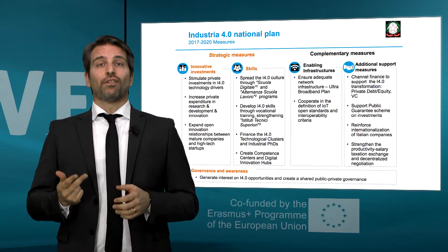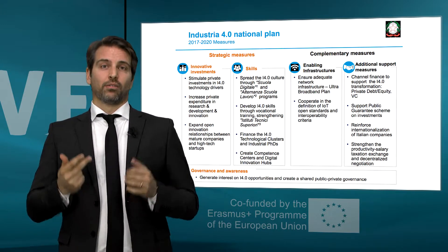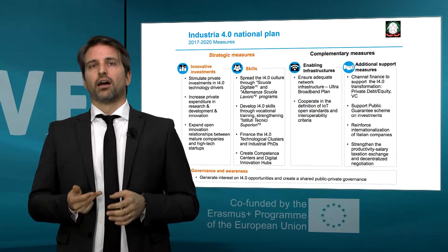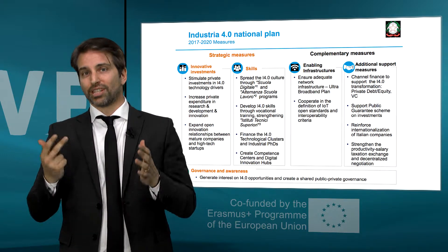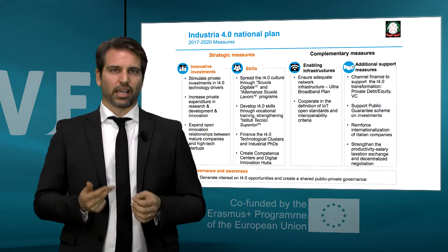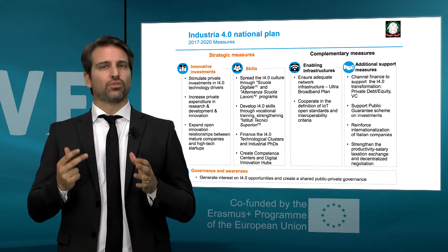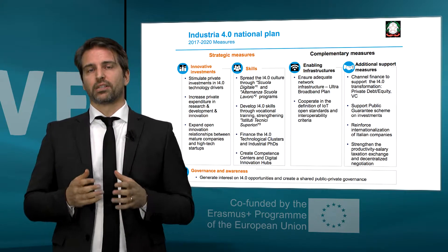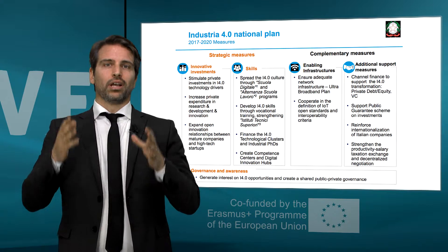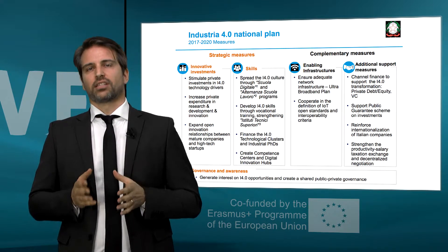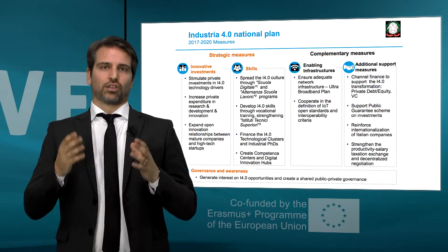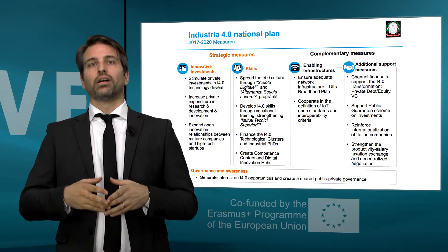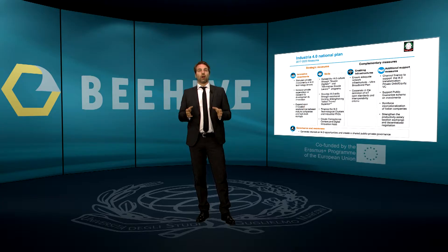There are also instruments of stimulation of output which strengthen the final results of the innovation process through, for example, a 50% reduction in the corporate income tax and in the regional production tax — two taxes present in the Italian legislation for companies — which are applicable to the income derived from the use of intangible assets like registered software, copyrighted industrial patents, or industrial models or industrial designs.